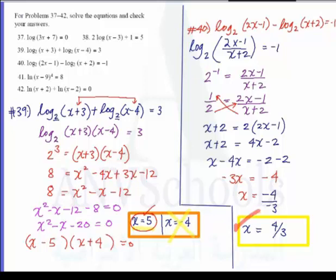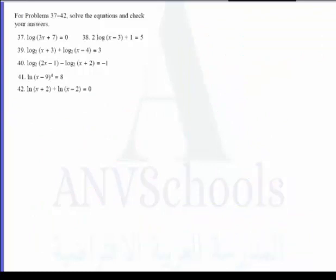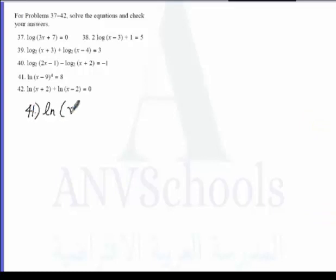Now we have number 41: ln of the quantity x minus 9, raised to the 4th power, is equal to 8. Notice that this is a natural logarithm, which has a base of e. We need to raise this equation to base e to solve it.